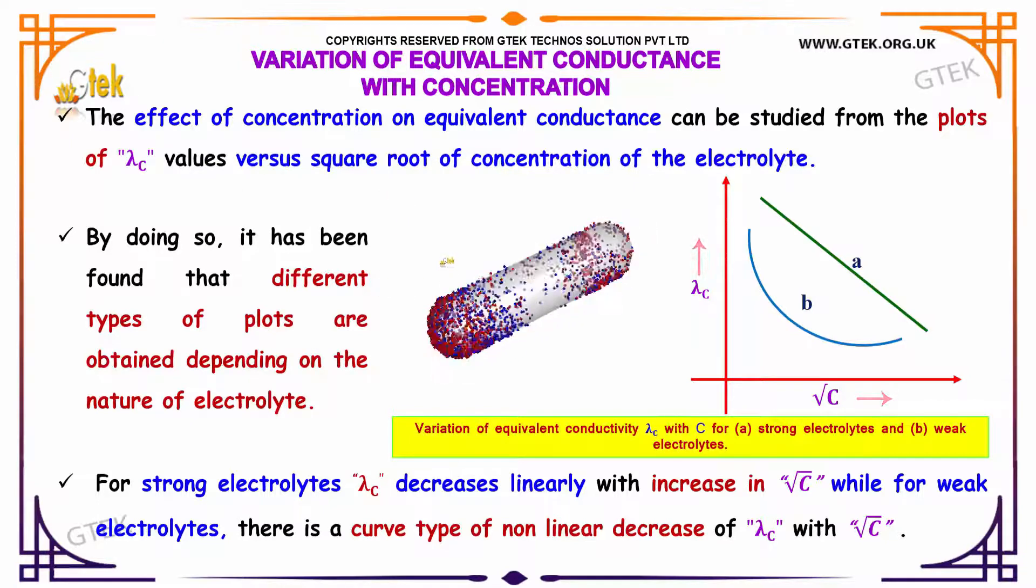By doing so, it has been found that different types of plots are obtained depending on the nature of the electrolyte. This is the indication of the variation of equivalent conductivity lambda c with c for strong electrolytes and weak electrolytes.